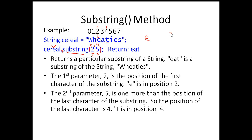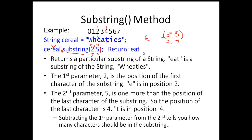If it was substring(3, 8), you could note that it's actually going to go from 3 to 7. There is another secret: if you subtract the first parameter from the second, it tells you how many characters should be in the substring. So 5 minus 2 gives us 3, which is exactly how many characters. If you went 8 minus 3, you'd get 5, meaning there would be 5 characters.